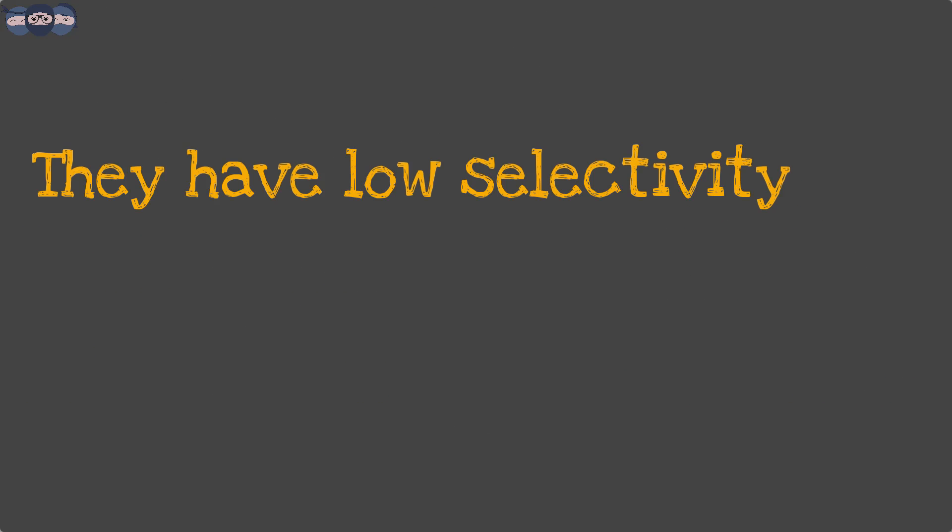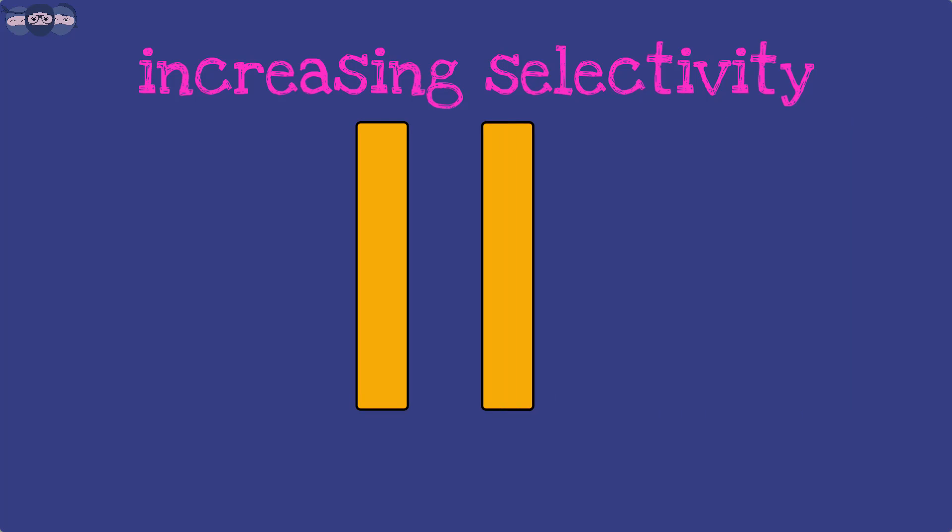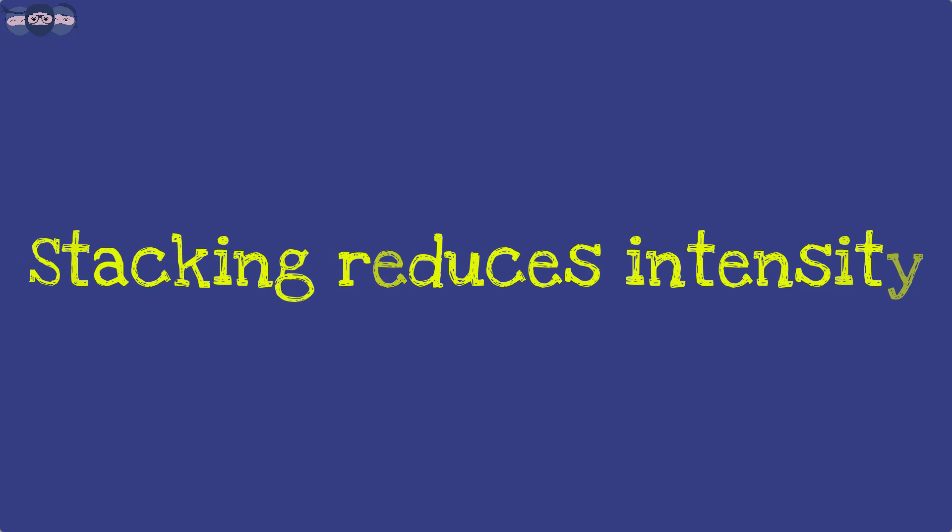The selectivity in such filters is very low and the emissions exiting these filters are not highly monochromatic. One can increase the selectivity of these filters by stacking them one after the another. However, this method can affect the intensity of radiation and reduce it.